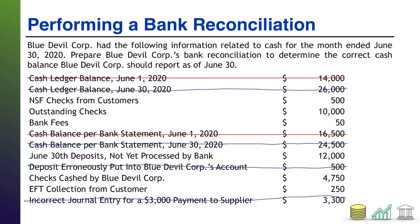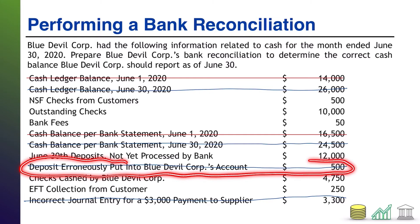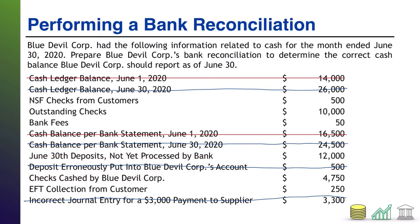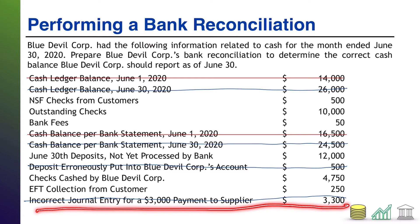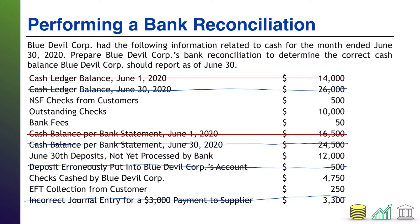Now, did these errors affect anything else? The deposit erroneously put into the bank account would affect the number of deposits the bank recorded, but we don't actually have that information given to us, so that error won't affect anything here. The incorrect journal entry isn't affecting checks or deposits — it was just an incorrect journal entry. So in this case, the errors did not affect other items, though in other problems they might.